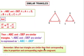Remember: when two triangles are similar, their corresponding sides are in proportion and their corresponding angles are congruent. This is the Angle-Angle-Angle (AAA) test for similarity.